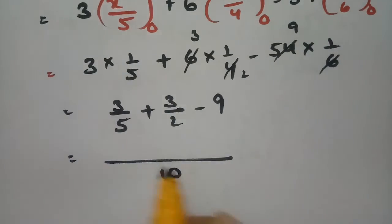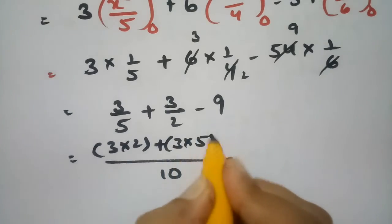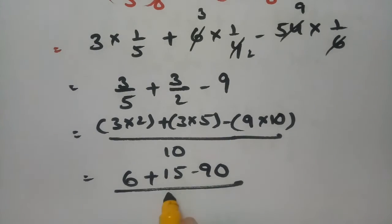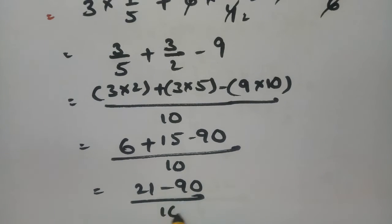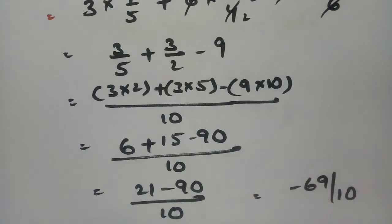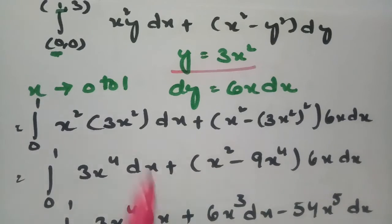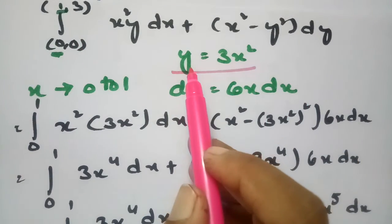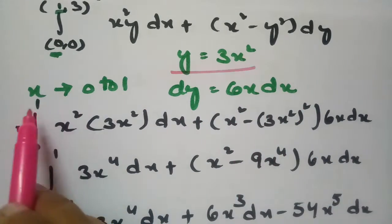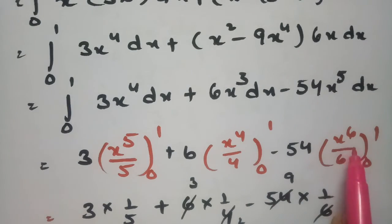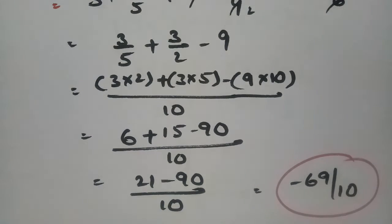Taking 10 as LCM: (3 times 2 plus 3 times 5 minus 9 times 10) / 10, which equals (6 plus 15 minus 90) / 10, giving 21 minus 90 over 10, which is minus 69/10. That is the final answer for the curve y equals 3x². Thank you for watching — if you liked it, please give a thumbs up, share with friends, and subscribe to this channel.